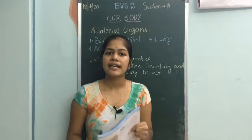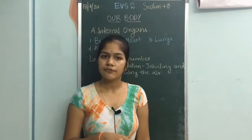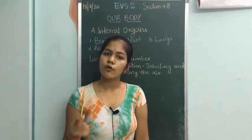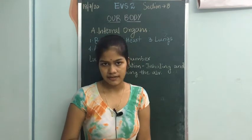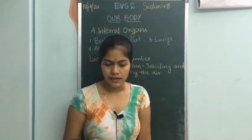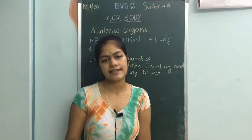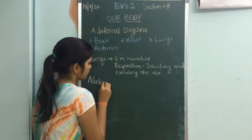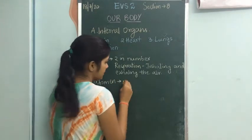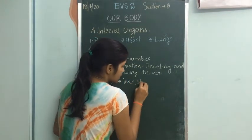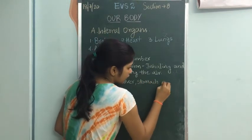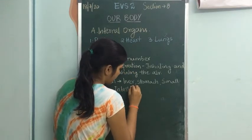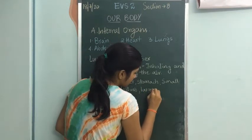To summarize the abdomen: it has four important organs — liver, stomach, small intestine, and large intestine. The food and water we take goes into the stomach and gets digested there. The digested food is absorbed by the blood, but the undigested food is eliminated in the form of excretory products.